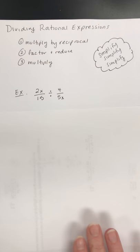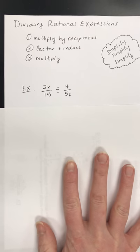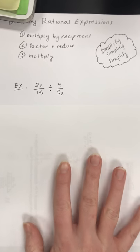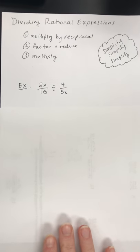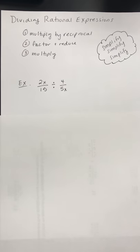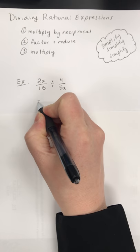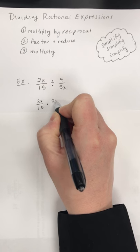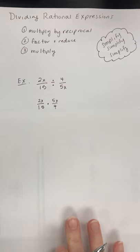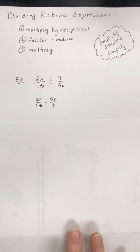Okay, so if I have my first example here of 2x over 15 divided by 4 over 5x, my first step is to multiply by the reciprocal. So I'm going to rewrite this as 2x over 15 times 5x over 4. Now what do I do next? I factor and reduce, and then I multiply.